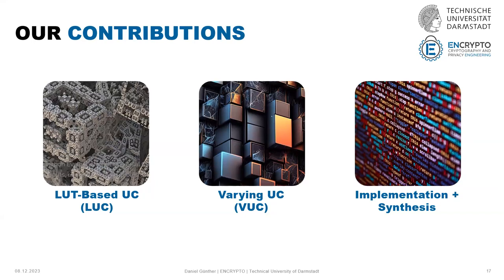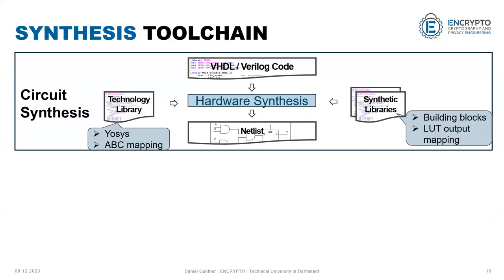We implemented our two constructions, and I want to briefly show you the toolchain of our implementation. We can implement our circuits using VHDL or Verilog code, and then we use hardware synthesis. For this hardware synthesis, we use a tool to map this to a netlist, and an LUT mapping to find some lookup-table representation of this hardware code. For optimizations, we use synthetic libraries and some concrete building blocks, which can implement a large set of identities.